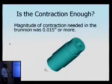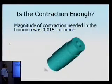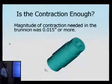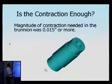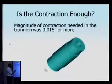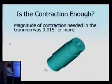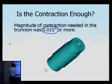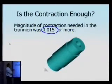In this particular case, we're looking at a real-life problem where the magnitude of contraction needed for the trunnion was 0.015 inches. They wanted to put it in the cooling medium to get at least that much contraction when taking it out of the liquid medium and trying to put it into the hub. If we are not getting this much contraction, then the trunnion is not suitable for the shrink fitting procedure.